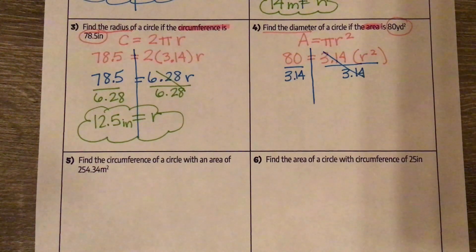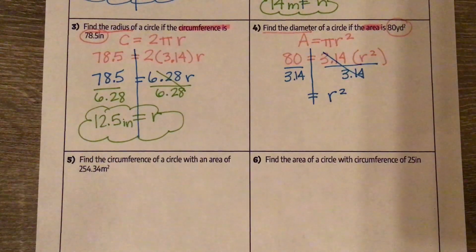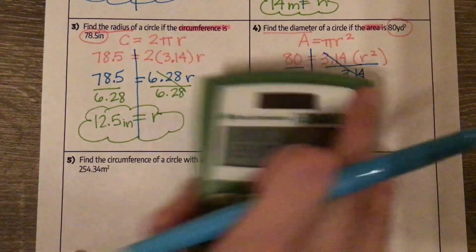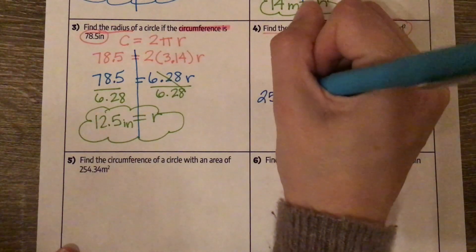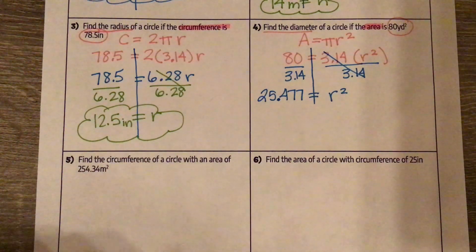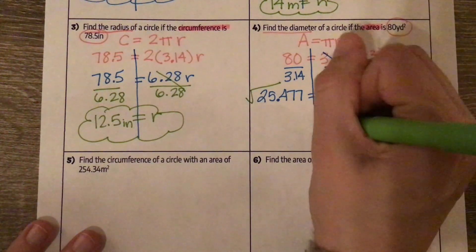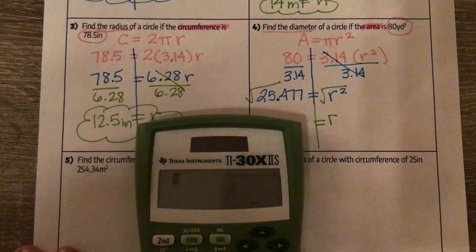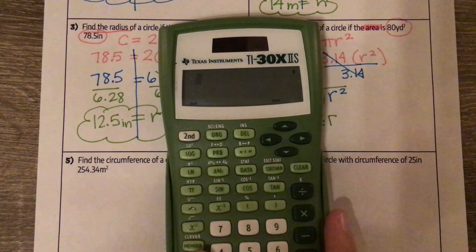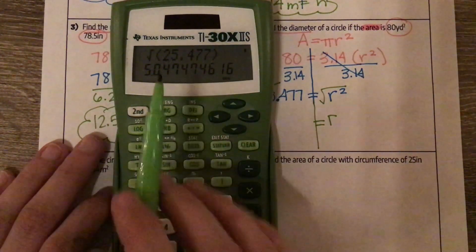So 80 divided by 3.14 gives a really long decimal. I try to wait and round until the end, so I'll write out 25.477. Remember, when solving equations we always use inverse operations — if there's multiplication we divide, if there's addition we subtract. So if there's squaring, the opposite is square rooting. The square root of r squared is r, and then the square root of 25.477. On a calculator, press second and then the square root sign above the x² button, type 25.477, press enter, and I get 5.047.